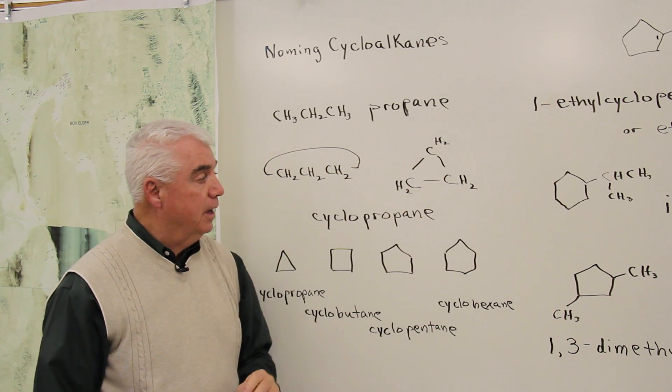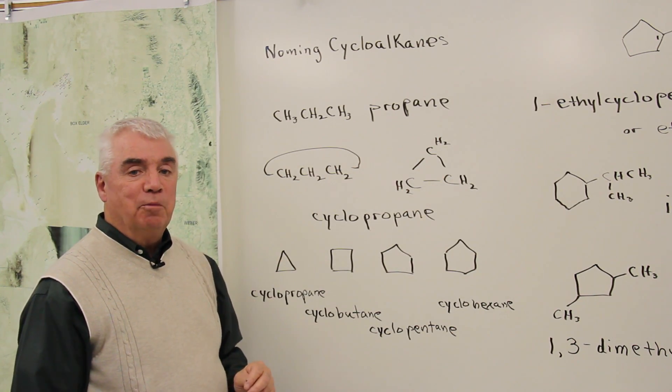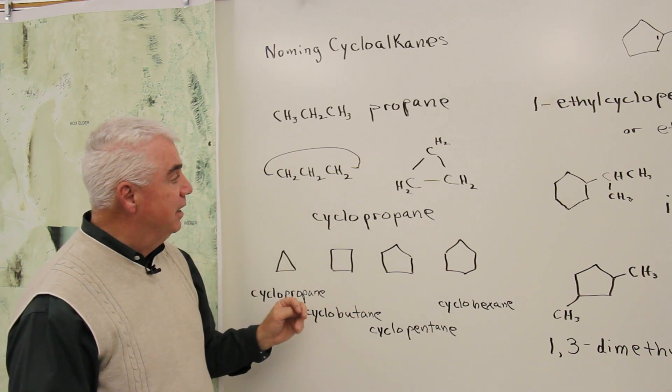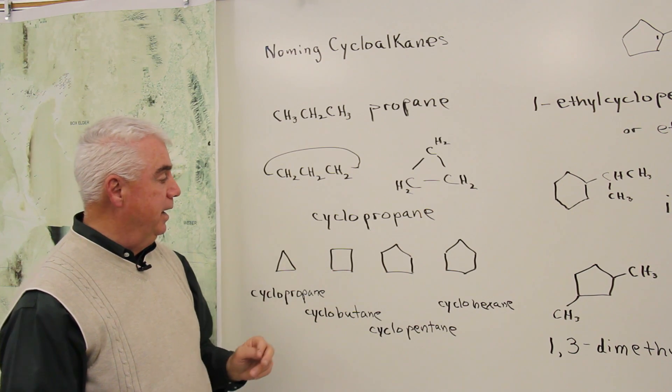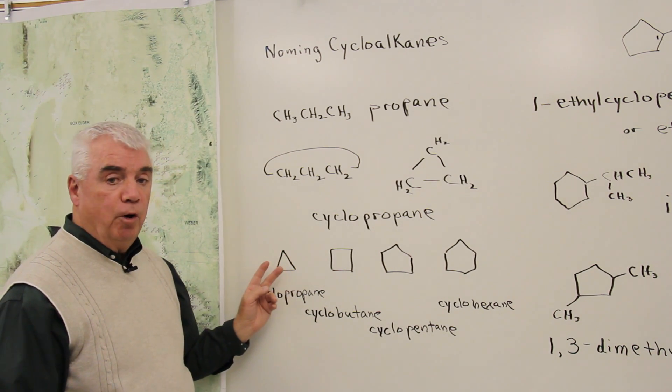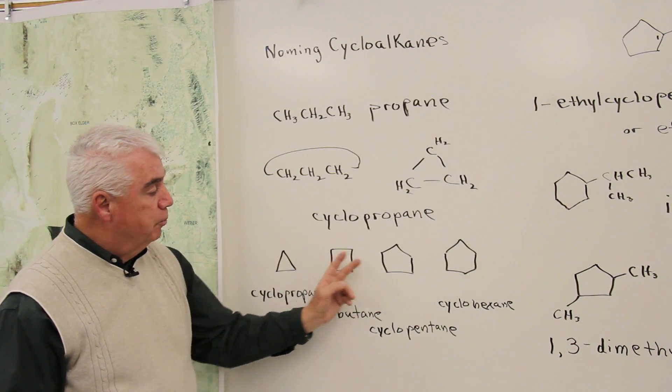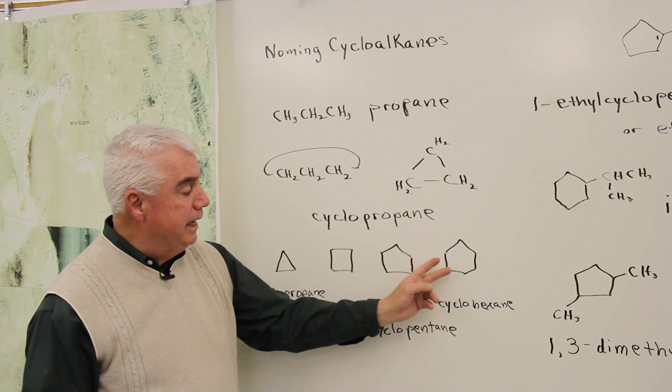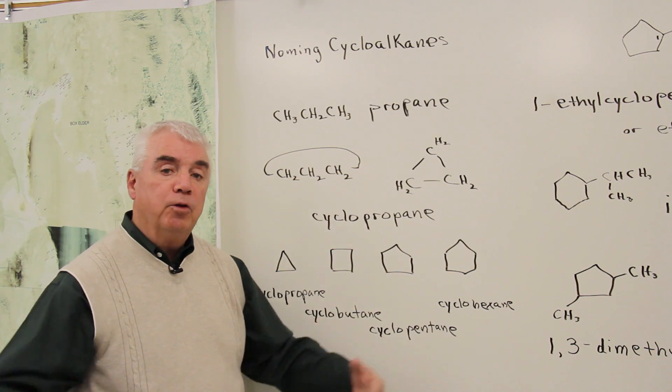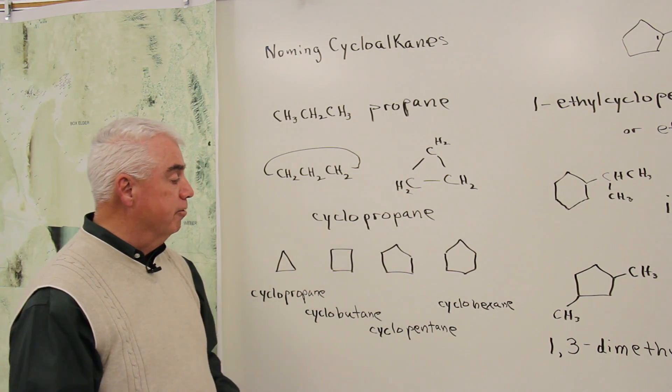Organic chemists are always seeking ways to abbreviate structures, and so they've abbreviated the structure of cyclopropane just with a triangle. And when you abbreviate cyclobutane, cyclopentane, and cyclohexane, the ring sizes keep going on from there.